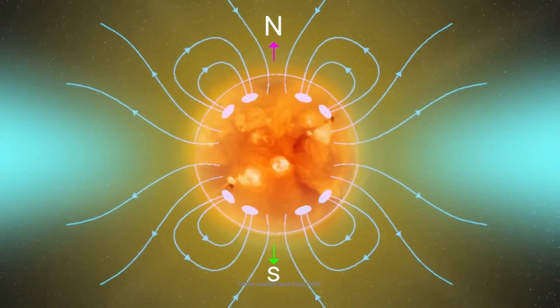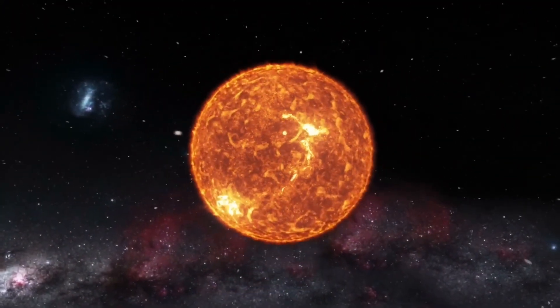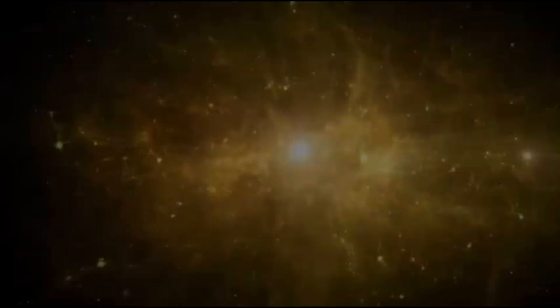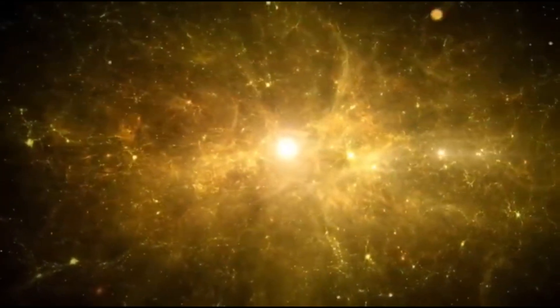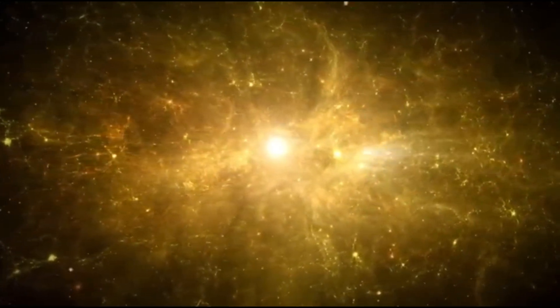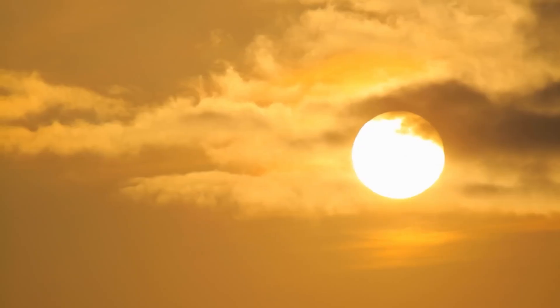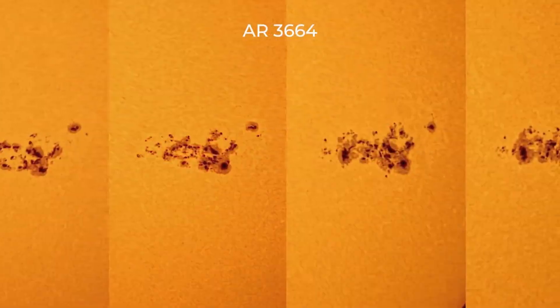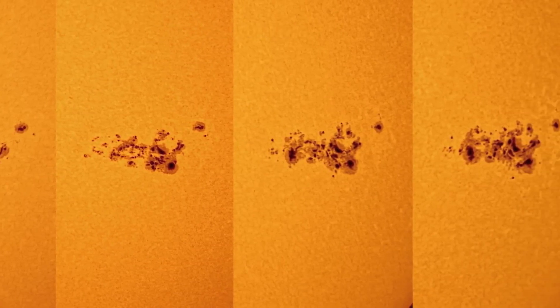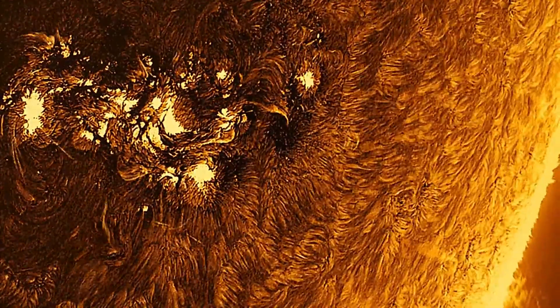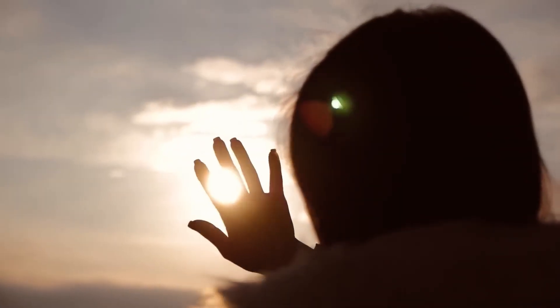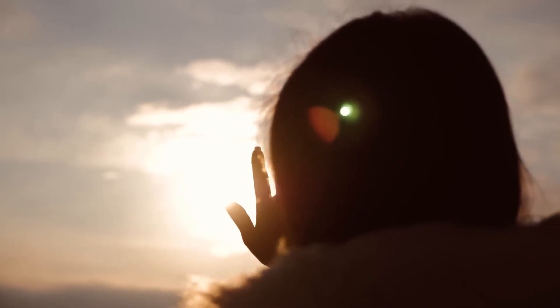Scientists labeled it Active Region 3664, and it didn't take long to live up to its name. This colossal sunspot unleashed fierce solar flares, some so powerful they triggered coronal mass ejections aimed straight at Earth. The result: one of the most dazzling aurora displays in recorded history, with vibrant lights stretching across the globe to places that had never seen them before. According to NASA, this was the most powerful geomagnetic storm in 500 years, and it even rattled observatories deep underground.